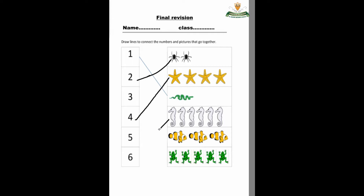How many fish? One, two, three. Where is number three? Yes. How many frogs? Let's count — one, two, three, four, five. Where is number five? Yes, very good!